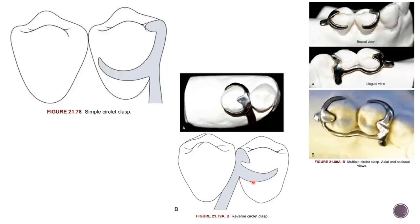Multiple circulate is a combination of two opposing simple circulate clasps joined at the terminal end of the reciprocal arm. It is used in periodontically compromised abutment teeth in distal extension situations. The two simple circulates are joined at the end of the reciprocal arm, making it useful for periodontically weak abutments.